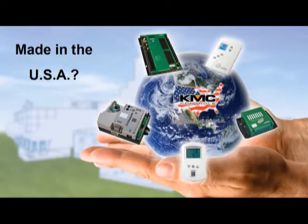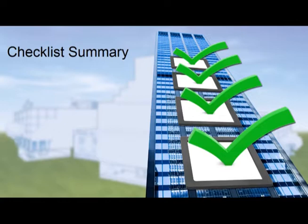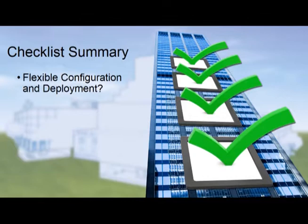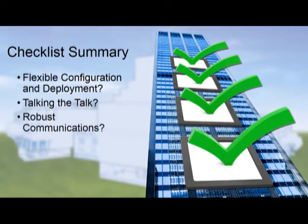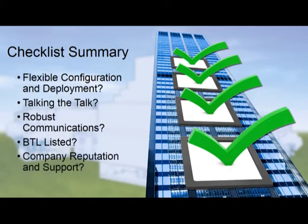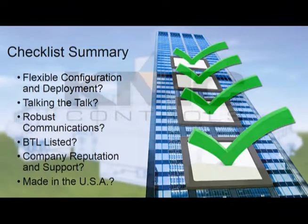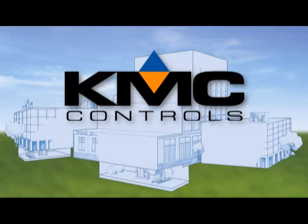To summarize, here are the questions that should be on your BACnet BAS buying checklist: flexible configuration and deployment, talking the talk, robust communications, BTL listed, company reputation and support, and made in the USA. For more information about BACnet, building automation systems, and other related subjects, visit www.kmccontrols.com.